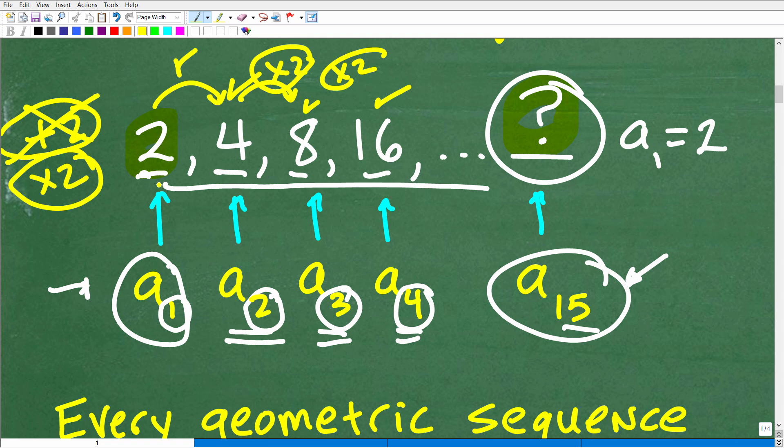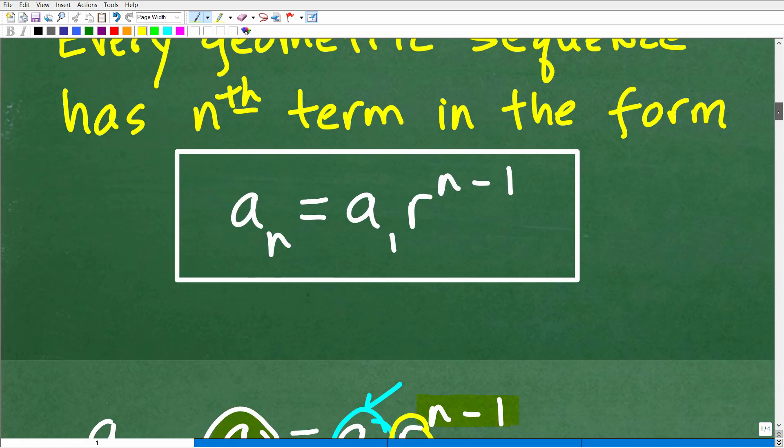That's our r value. How do you find that? When dealing with a geometric sequence, take any two sequential terms and divide one by the previous. If I take 4 divided by 2, that's 2. If I take 16 divided by 8, that's 2. You'll always get that common ratio. That's what r is equal to.